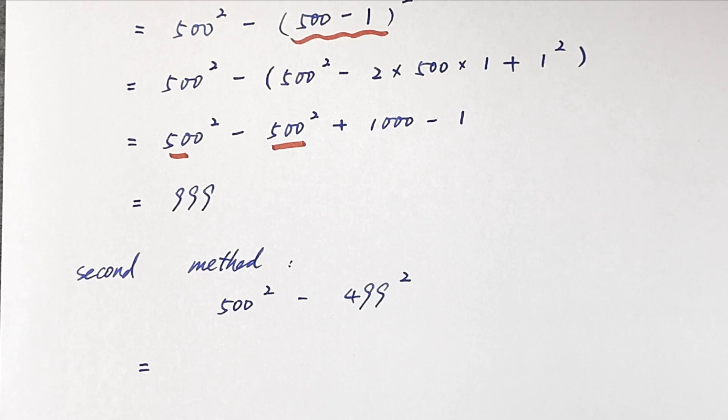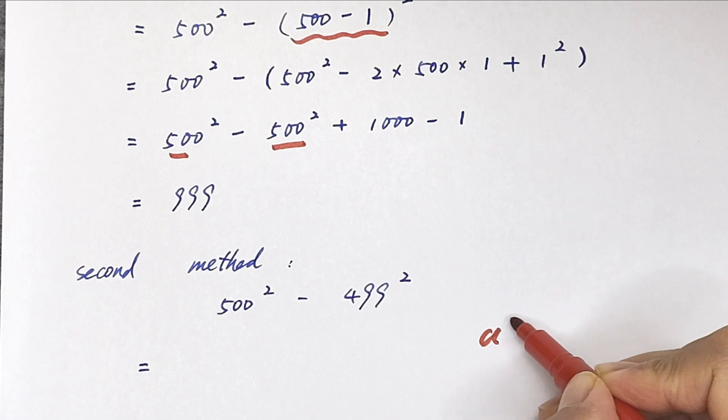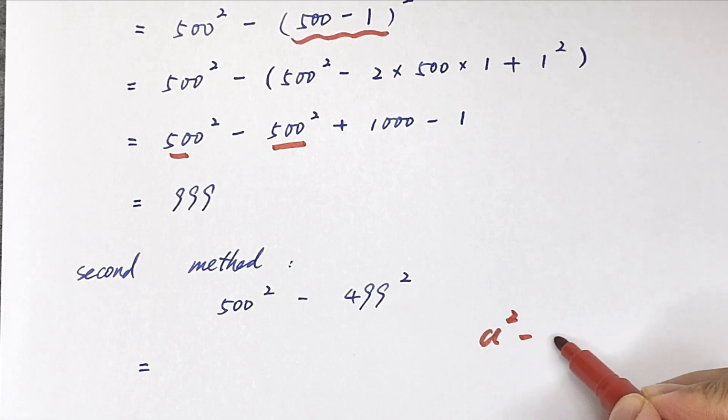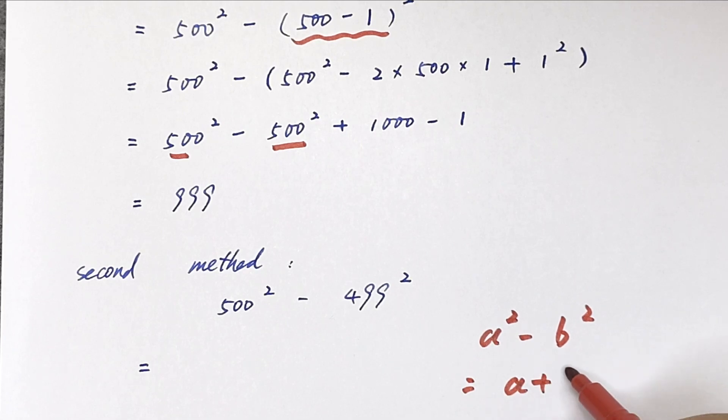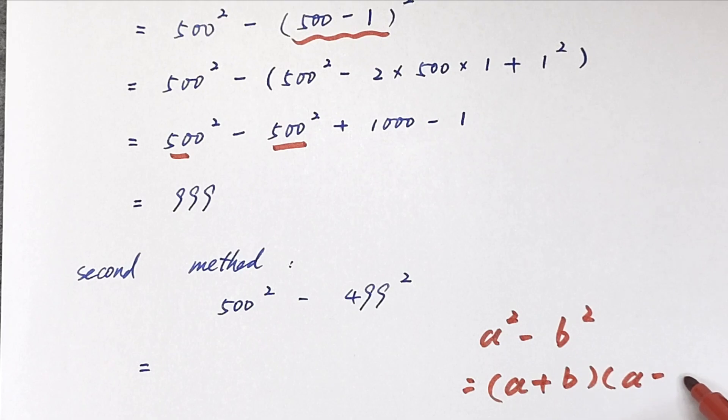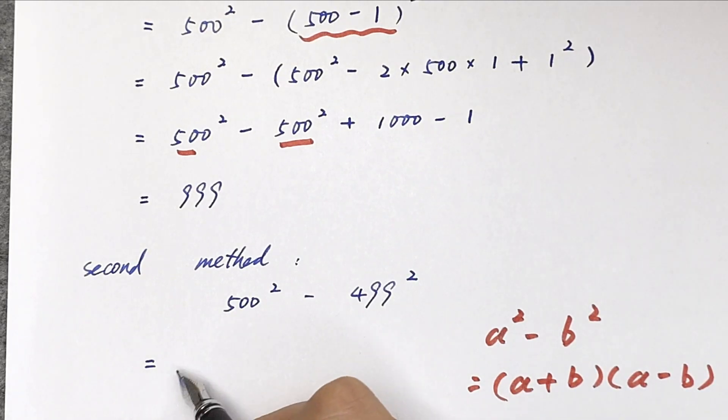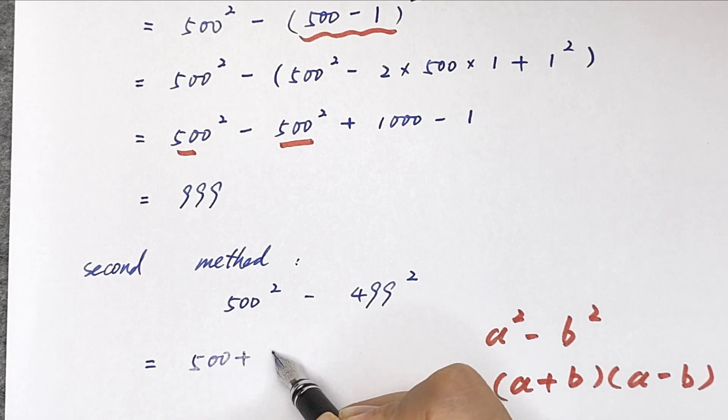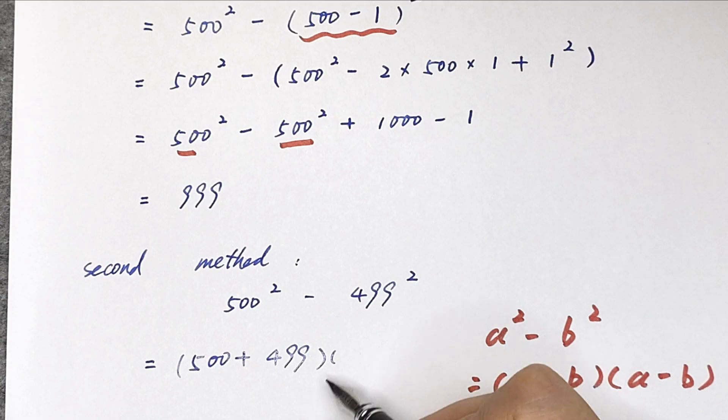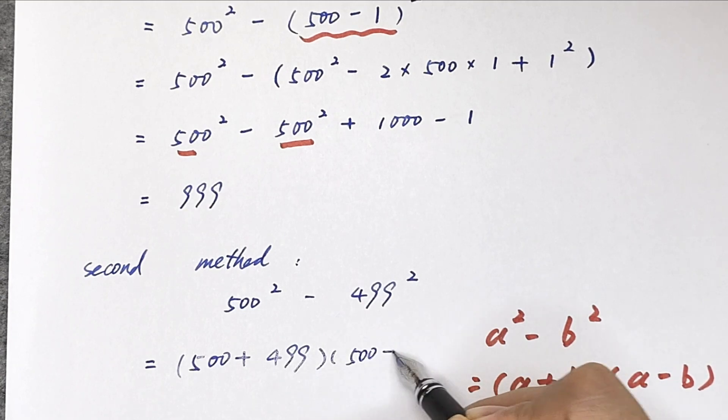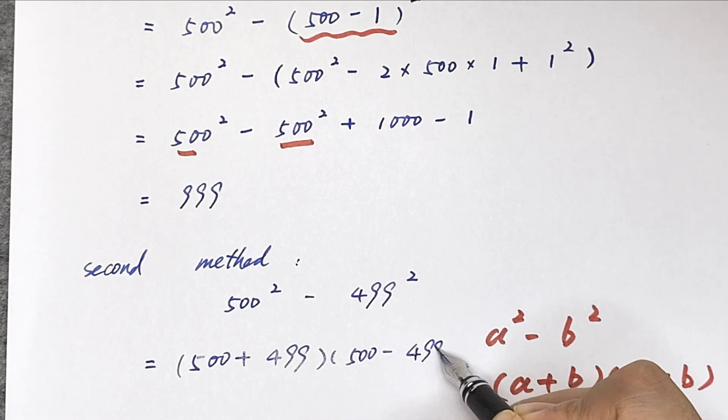A squared minus b squared is equal to a plus b bracket times a minus b, set to be 500 plus 499 bracket times 500 minus 499.